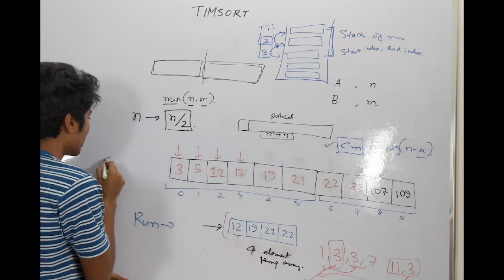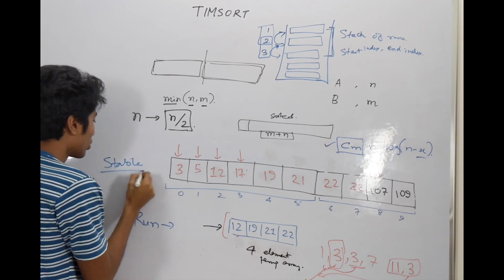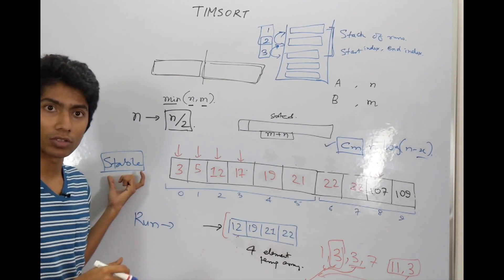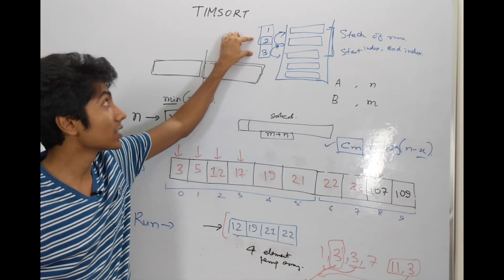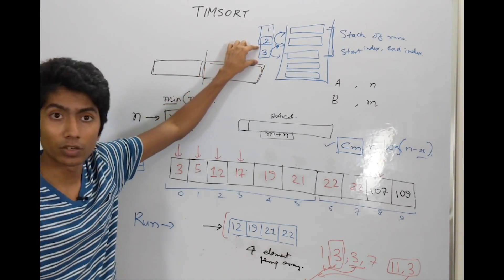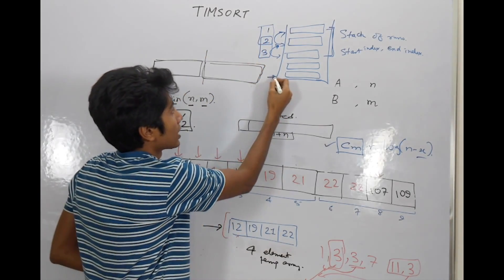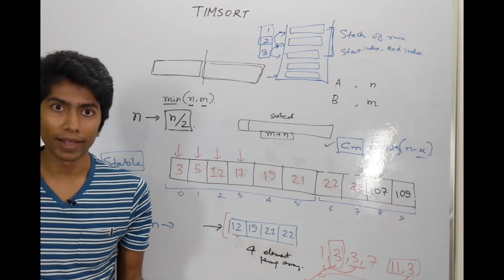Why is this? Because we want stability in the sorting algorithm and we're not going to go into too much detail of making this algorithm stable, but this is the reason why we are merging just adjacent ones. Otherwise, you could have merged the last one with the first one also. There's no problem there.